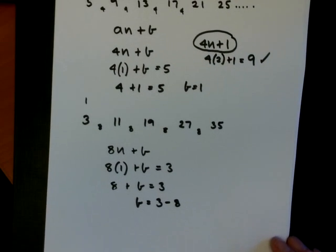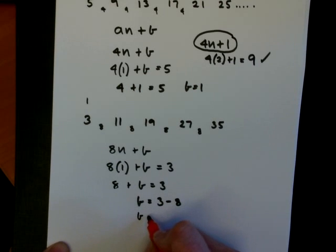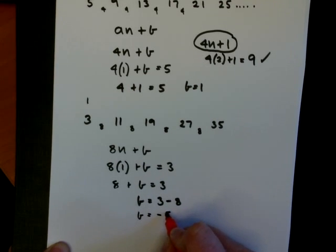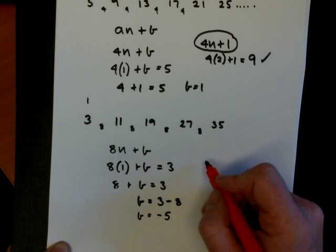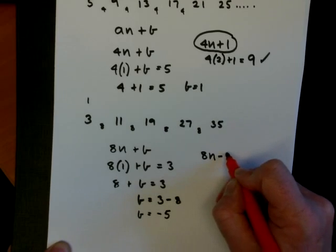And this will give us a negative answer because the negative number is larger than the positive. So 3 take 8, the difference is 5, and it must be written as negative 5. So the nth term here then is 8n minus 5.